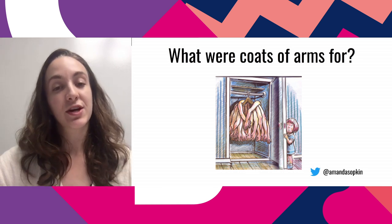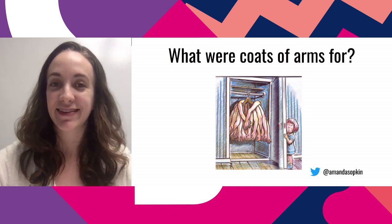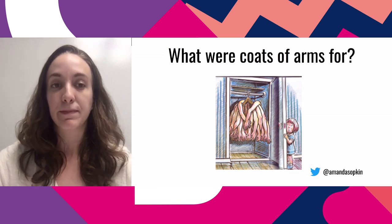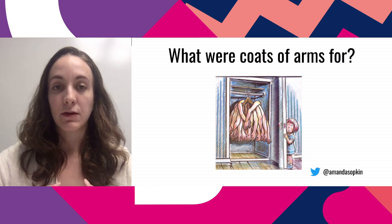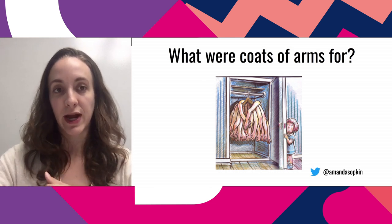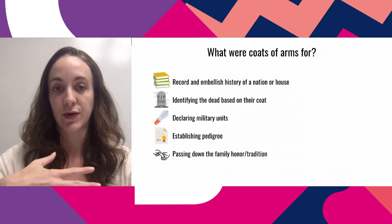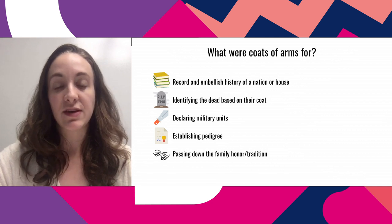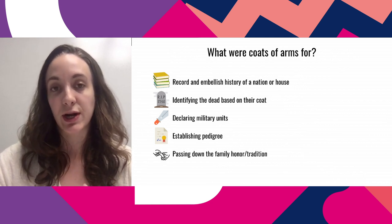If you hear the term coats of arms, you might picture something that looks like a crest — but more precisely, the term comes from when preparing for battle, you would put on a suit of armor and then an armorial coat over that, which would have a coat of arms or crest printed onto it. The purpose of a coat of arms is to be easily identifiable for the house or country it represents.